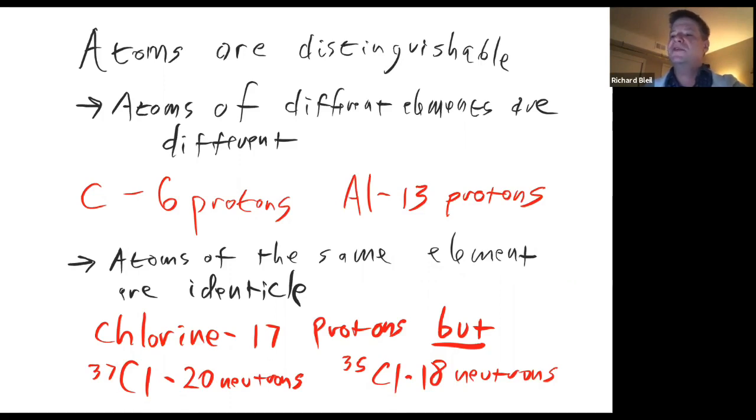The first part is that atoms of different elements are different. They're distinguishable. This is very true, and it's based on the number of protons, which is what we call the atomic number.